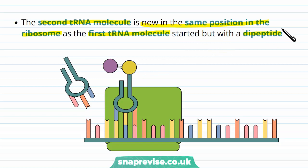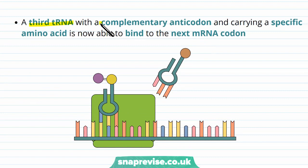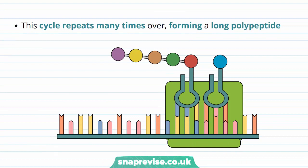Think of the ribosome as a large 3D complex shape with a slot for the mRNA — it moves along like a kind of ratchet. Each time it does this, the tRNA moves to a certain position in the ribosome where it holds the growing protein. The third tRNA comes in with a complementary anticodon and its own specific amino acid, binding to the next codon. The first tRNA has now gone to pick up another amino acid — methionine — to be used later if required. The cycle repeats over and over with tRNAs coming and going, picking up their next amino acid and coming back, forming a long polypeptide that could be many hundreds of amino acids long.